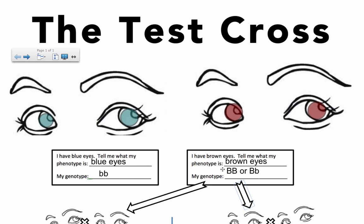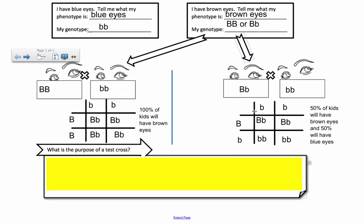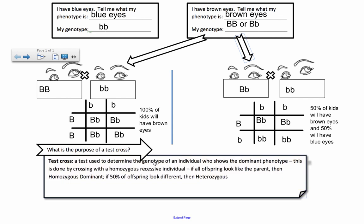Pure breeding usually means that they're not heterozygous — they're either big B, big B, or whatever trait we're talking about, whether it's leaf color, seed color, or seed shape. Pure breeding means they have two copies of the same allele. The purpose of a test cross is to determine the genotype of an individual who shows the dominant phenotype, done by crossing with a homozygous recessive individual. If all offspring look like the parent, then homozygous dominant is the actual genotype. If 50% of the offspring are different, then the parent was actually heterozygous.